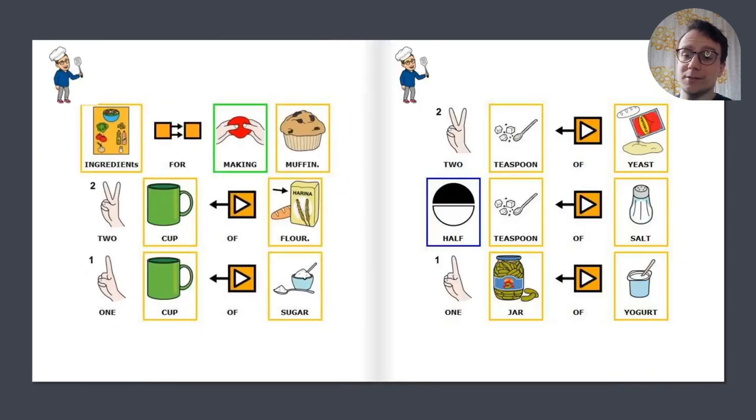Ingredients for making muffins. Two cups of flour, one cup of sugar, two teaspoons of yeast, half teaspoon of salt, one jar of yogurt.